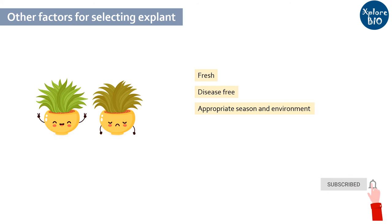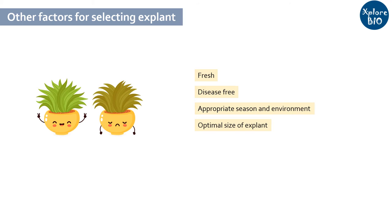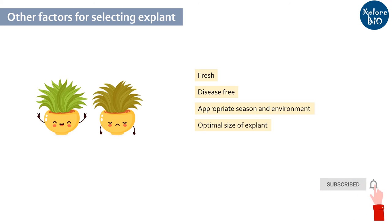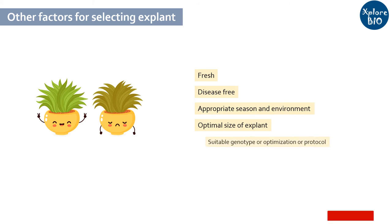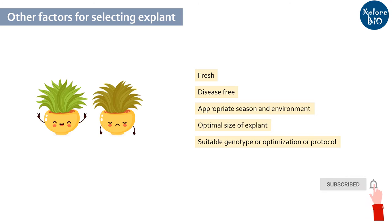Smaller explants are harder to culture; larger explants probably contain more nutrient reserves and plant growth regulators to sustain the culture, so the size should be optimal. Genetic constitution or the type of variety is one of the major factors that governs tissue culture efficiency, and protocols might need modification accordingly.